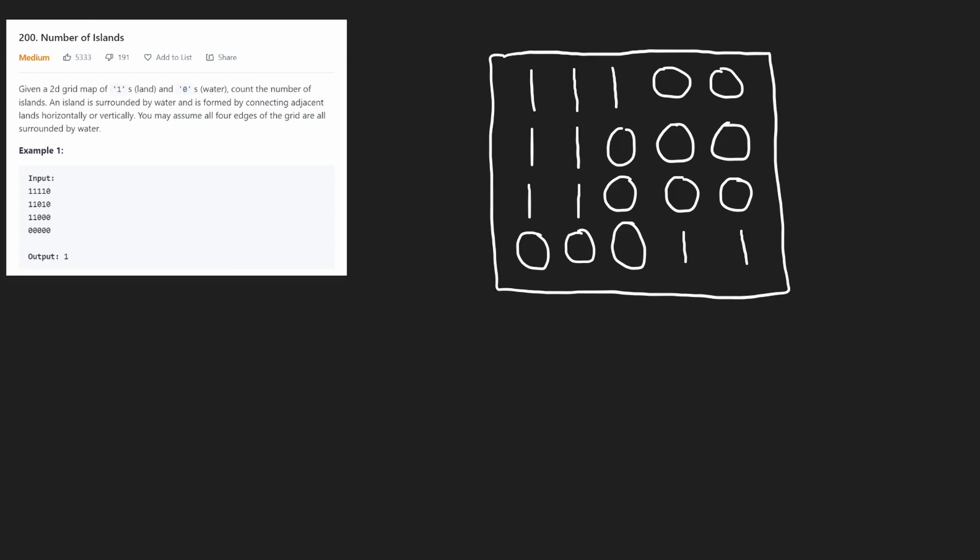We're given a 2D grid where ones represent land and zeros represent water. We want to count the total number of islands that exist. An island is defined as ones being connected adjacently horizontally or vertically — not diagonally. The entire grid is surrounded by water.